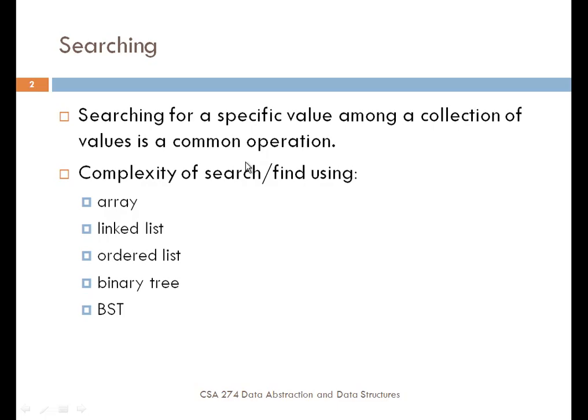What we want to be able to do is search for specific values amongst a collection of elements. Previously we've looked at a number of different kinds of data structures: arrays, linked lists, binary trees and binary search trees, and graphs.